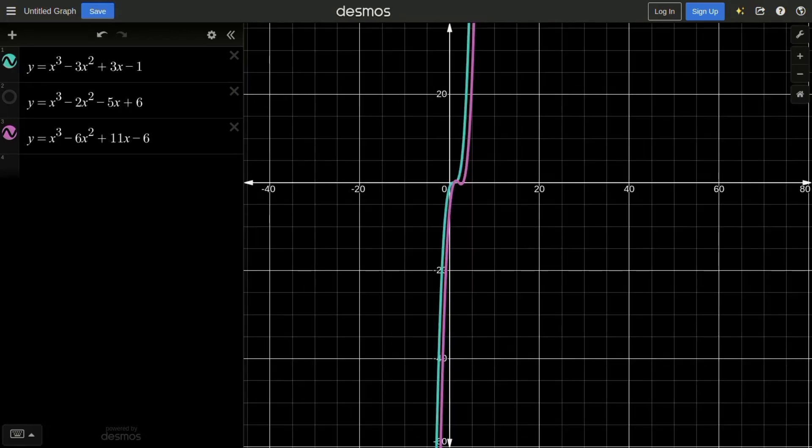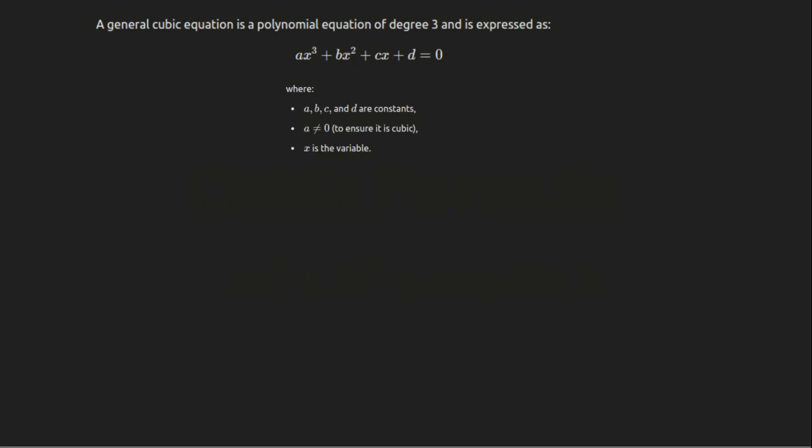To solve, we begin with the general cubic equation, ax³ + bx² + cx + d = 0. First, we divide through by a to simplify the equation. This gives us x³ + (b/a)x² + (c/a)x + (d/a) = 0.